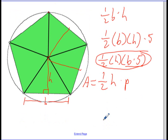So, taking that formula one step further, that height is really the apothem. So the area of a regular polygon can be found by doing one-half times the apothem times the perimeter. And that's how you can calculate the area of a regular polygon.